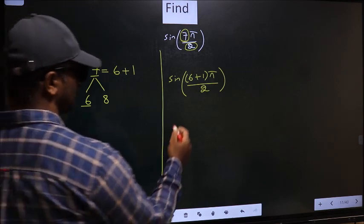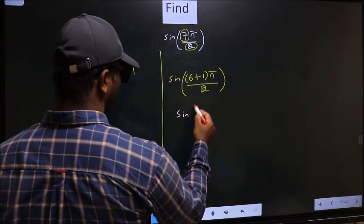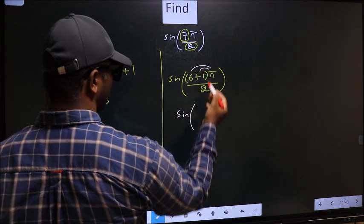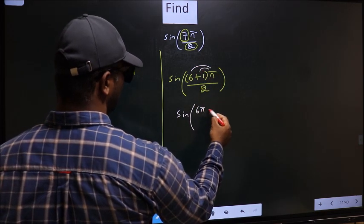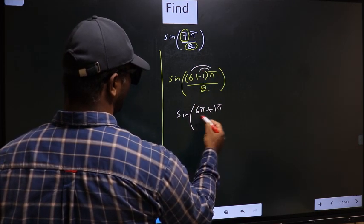Next. Sine. Now you should open up the brackets. So you get (6π + 1π)/2.